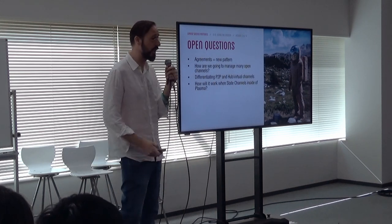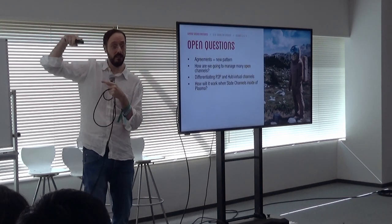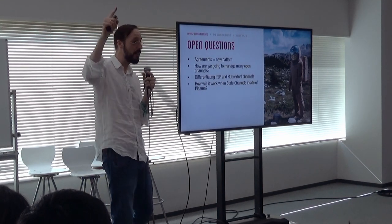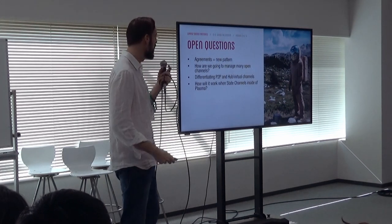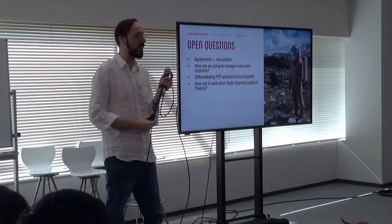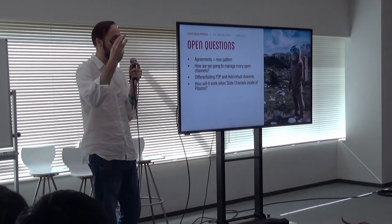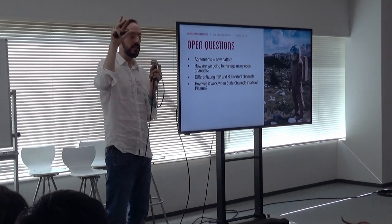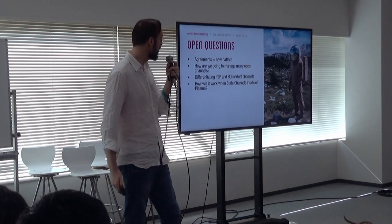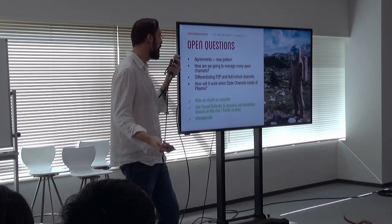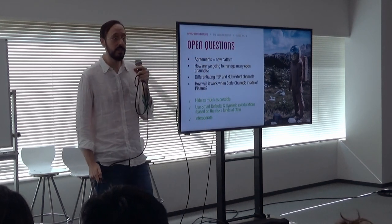And how are we going to manage many open channels? Because if it's peer-to-peer, theoretically I could have a channel with each of you in my wallet — thousands of lines. Or if I have a hub, I would have the hub with thousands of lines with people. The apps would be installed in my wallet. Many projects yesterday introduced the idea of plugins — apps inside your wallet to manage. You need to differentiate these things. And how state channels inside of Plasma will work, we have no clue. Hide as much as possible, interoperate — these are probably the solutions.